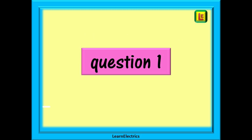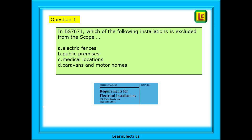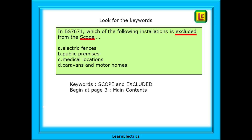We can begin with question one. With each question, pause the video as required and follow the page number prompts and clues as we find the answer. The first question is: in BS 7671, which of the following installations is excluded from the scope? We should begin by picking out the keywords in the question. Every question will have been written to include enough information and clues to enable you to find the answer. The keywords here are 'scope' and 'excluded'. So we should begin our search by going to the main contents page on page 3.